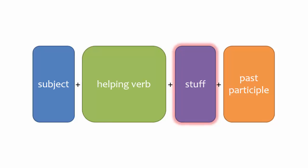Words that say to whom or for whom the action happened, as well as other words that add to the meaning of the sentence — just think of this as the filler between the helping verb and the participle. And finally, the past participle, which you will learn about in this video.